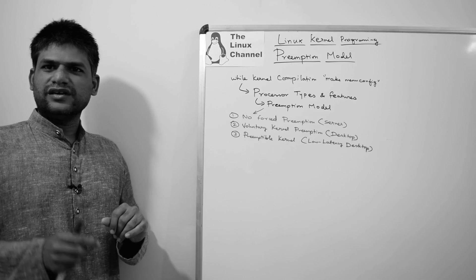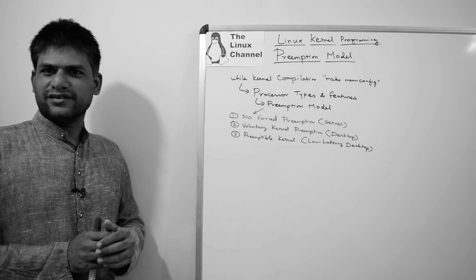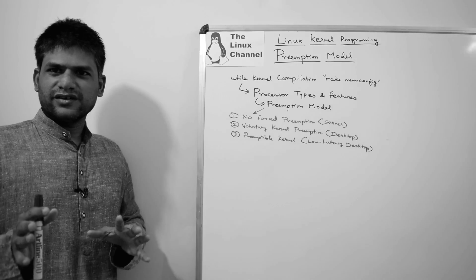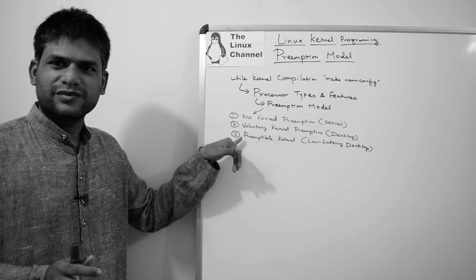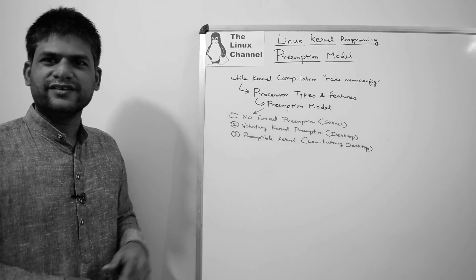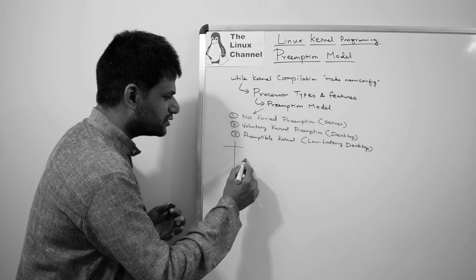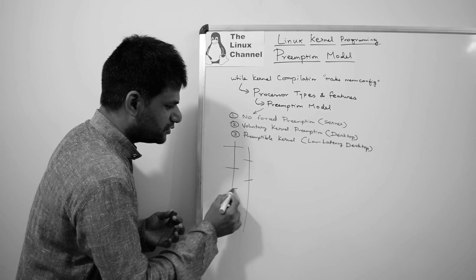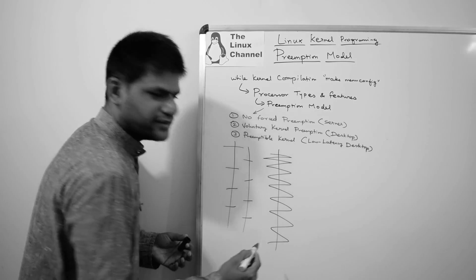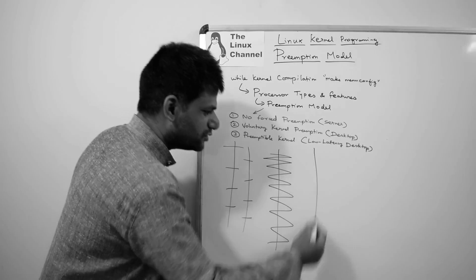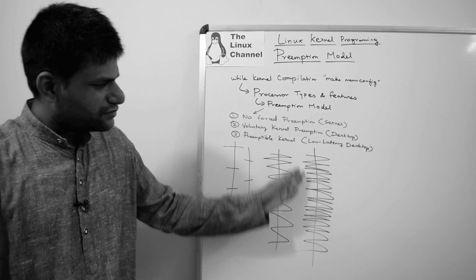If you are very sure that the load on your system is moderate or below average and you have a very good system, there are chances you can choose to compile with the preemptive kernel option three. To put it simply: option one is almost no preemption, so task switches happen only occasionally; option two enables preemption and switches happen much more frequently; option three switches at an even higher rate.